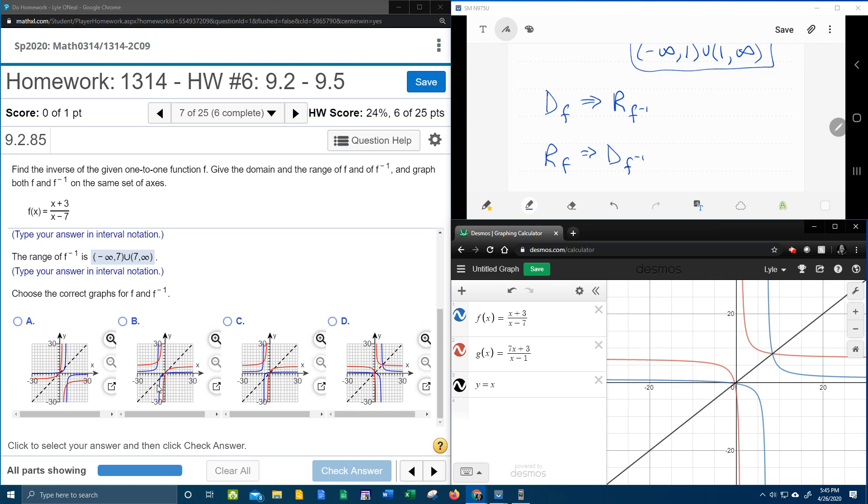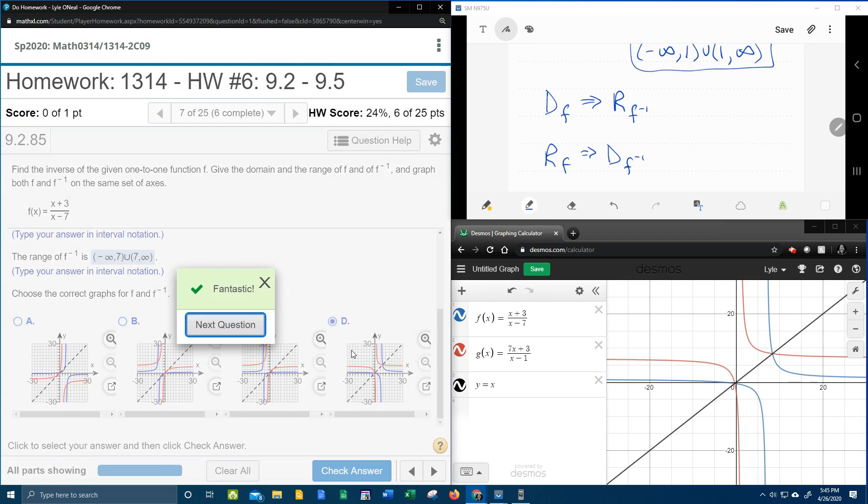This is funny. Only one of these graphs shows the line y equals x being a line of symmetry. Notice this dotted line doesn't cut these in half, doesn't cut these in half, doesn't cut these in half. D is the only graph that shows the symmetry correct, and so it has to be D.